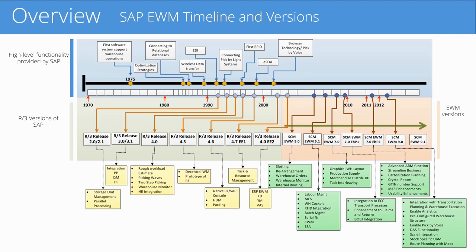As you can see in the chart, SAP introduced storage units and parallel processing in 1993 with SAP R3 release 2.0 and 2.1. In the late 90s, SAP introduced the decentralized warehouse management in SAP R3 release 4.5.